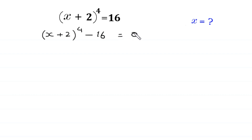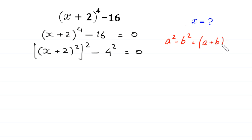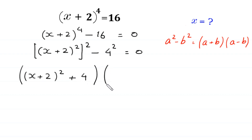Now (x + 2)⁴ can be written as [(x + 2)²]², so the expression becomes [(x + 2)²]² minus 4² equals 0. By using the algebraic identity a² minus b² equals (a + b)(a − b), this expression becomes [(x + 2)² + 4] times [(x + 2)² − 4] equals 0.